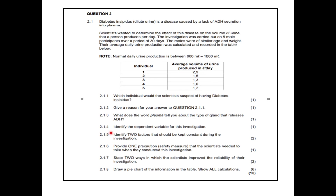Question 2.1.4: Identify the dependent variable in this investigation. Dependent variable is what you measure. The text says the experiment was carried out on five males, the males were of similar age, and their average daily urine production was calculated and recorded. What did the scientists measure? The average daily urine production — confirmed by it being in the table as well. So the dependent variable is: average volume of urine produced.